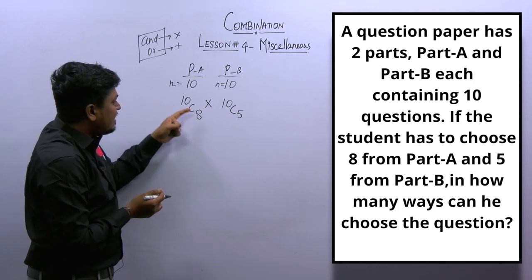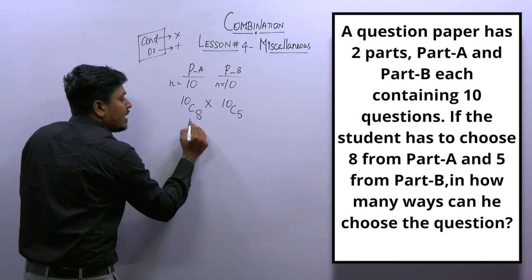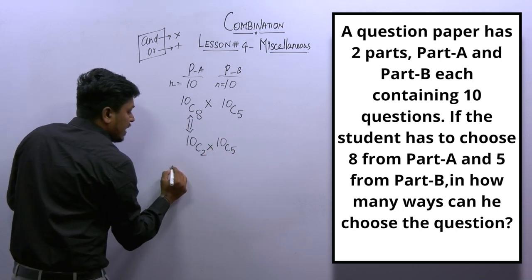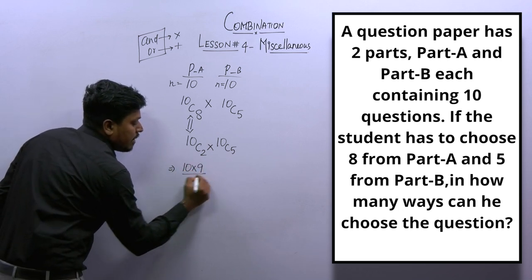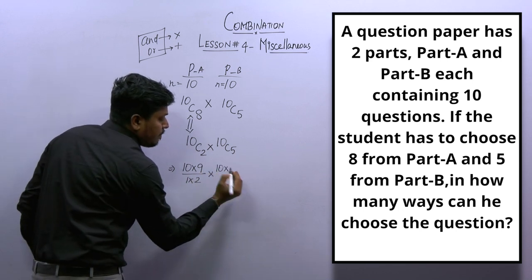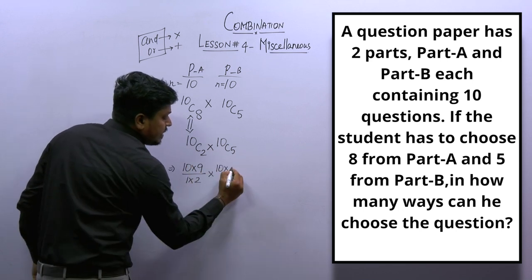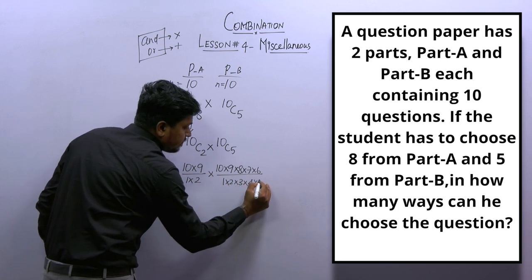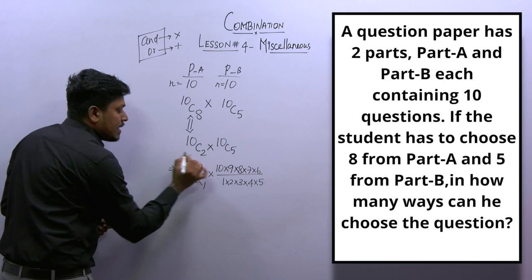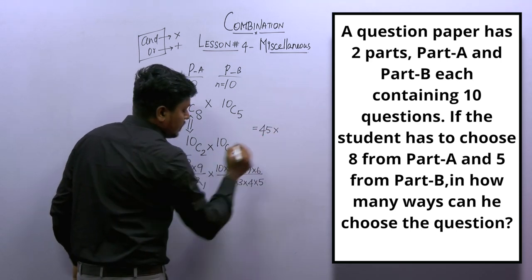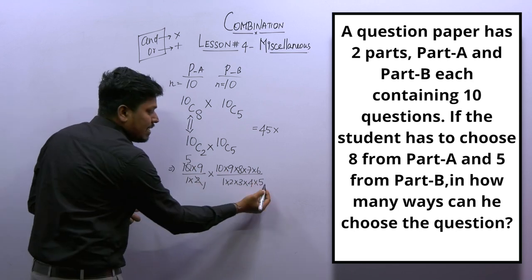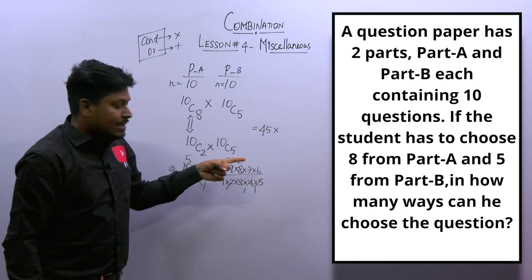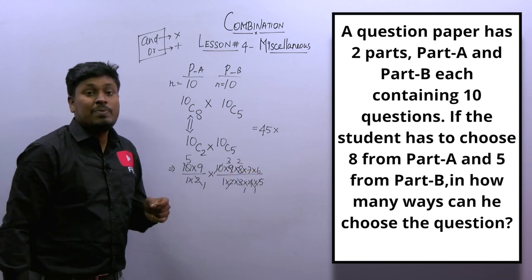10C8 can be simplified as 10C2, since 10 − 8 = 2. So 10C2 = 10 × 9 / (1 × 2) = 45. For 10C5: 10 × 9 × 8 × 7 × 6 divided by 1 × 2 × 3 × 4 × 5. Cancelling: 5 × 2 = 10, 3 × 3 = 9, 4 × 2 = 8. So 3 × 2 = 6, 6 × 6 = 36, and 36 × 7 = 252. So we have 45 × 252.